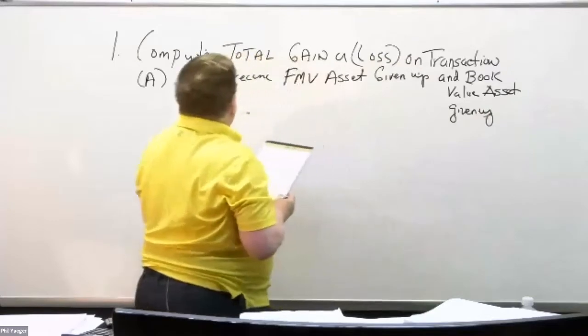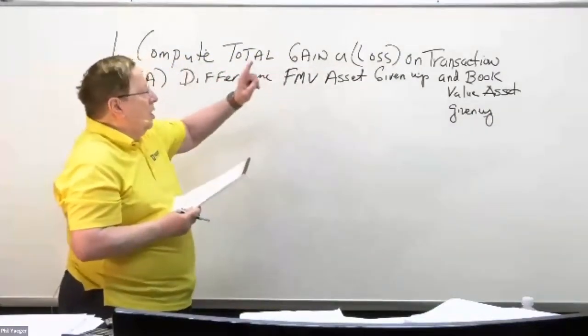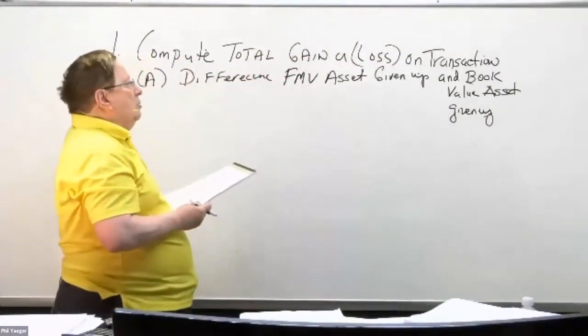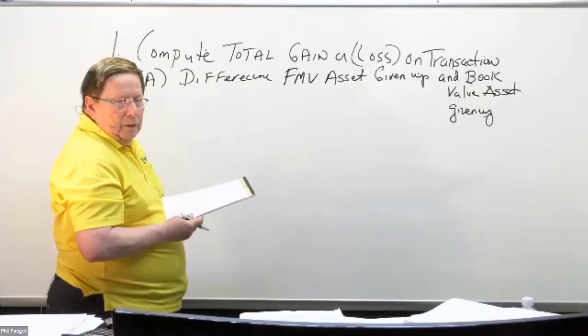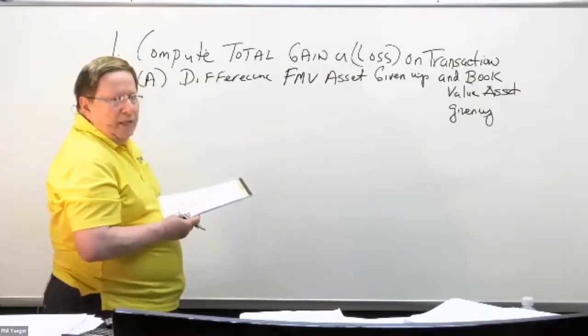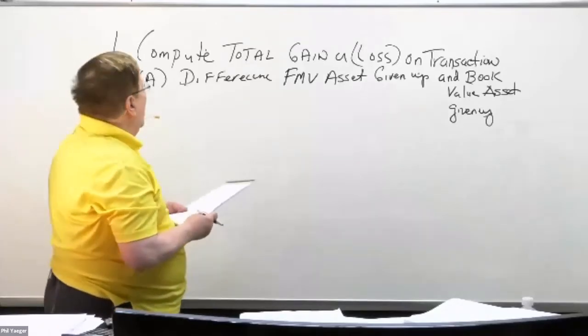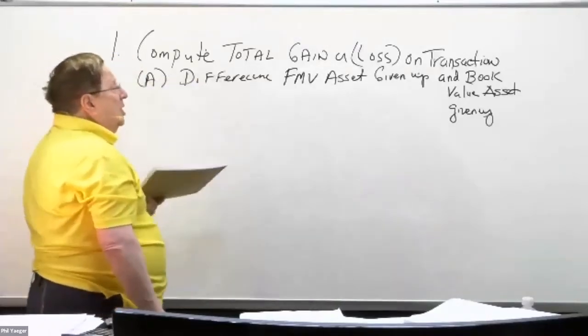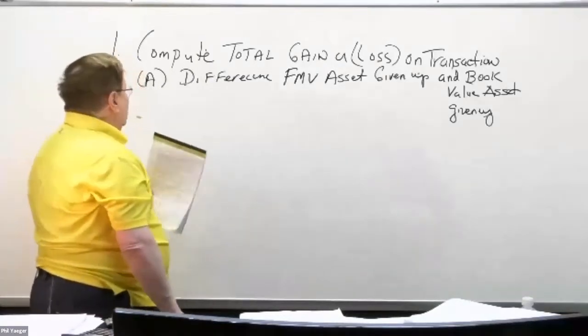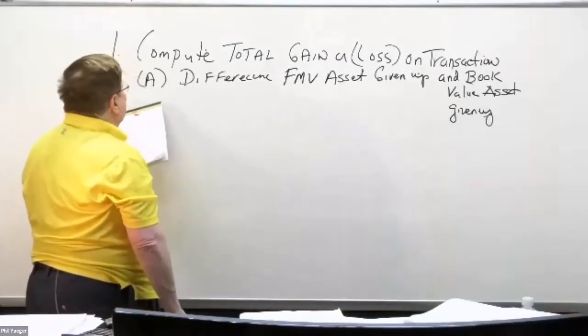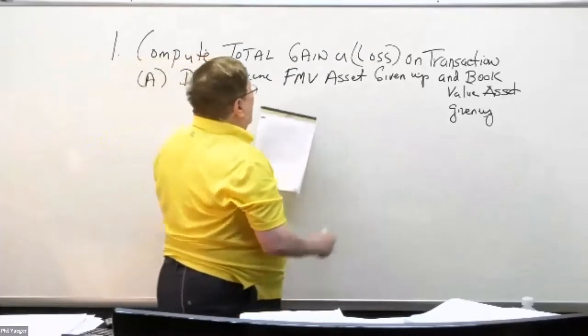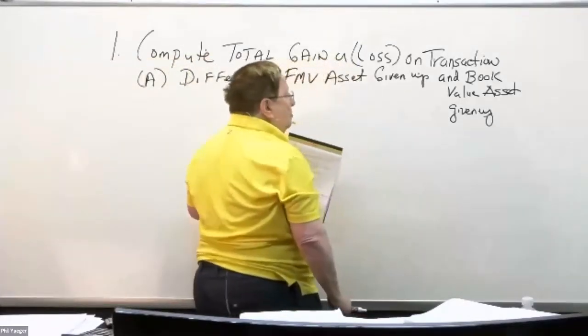Whether the transaction has commercial substance or not, you still have to compute the gain or loss. The first thing you're going to do is compute the total gain or loss on the transaction, whether it has commercial substance or not. The gain is calculated by taking the difference between the fair market value of the asset given up and the book value of the asset given up.